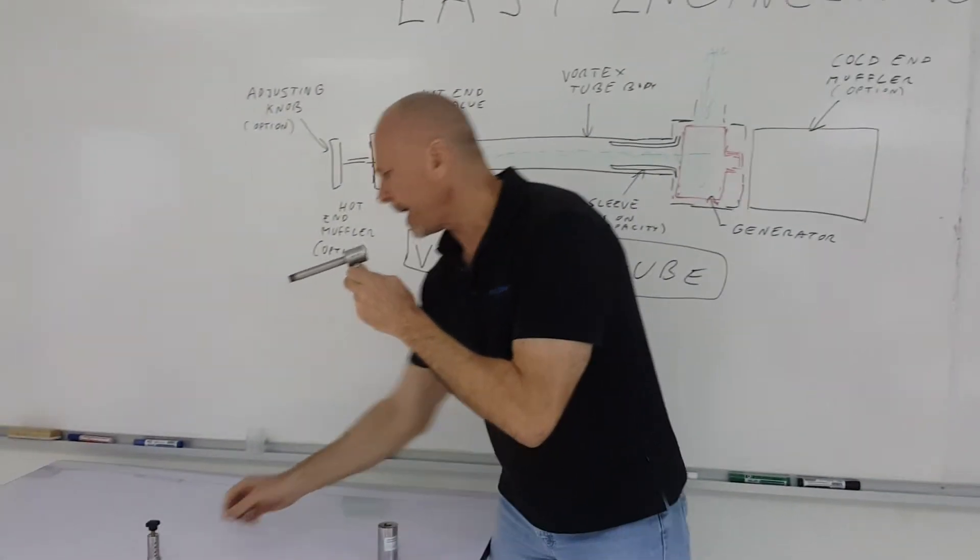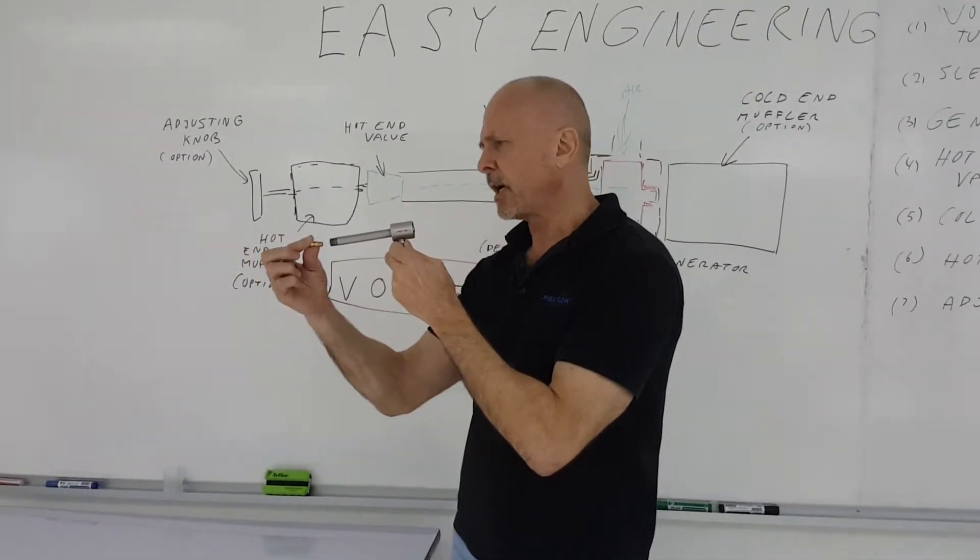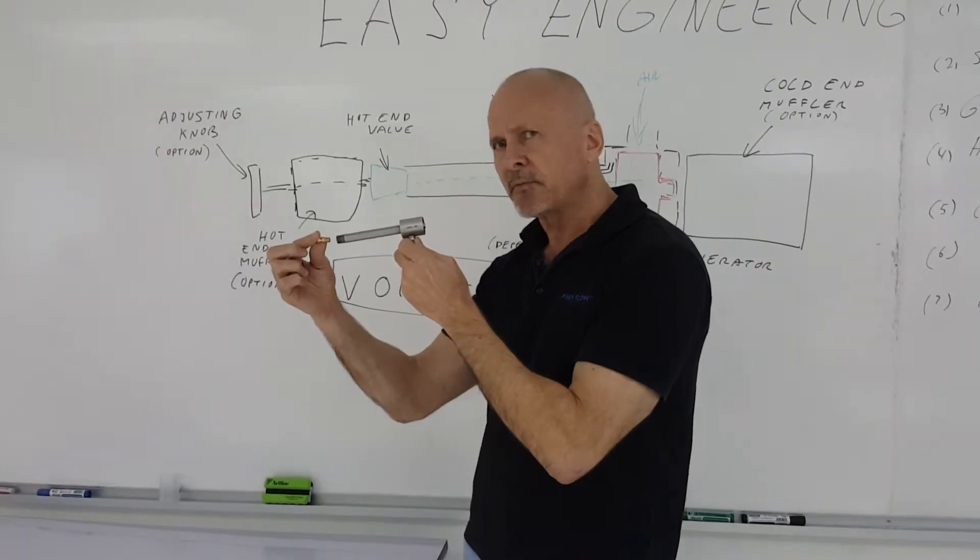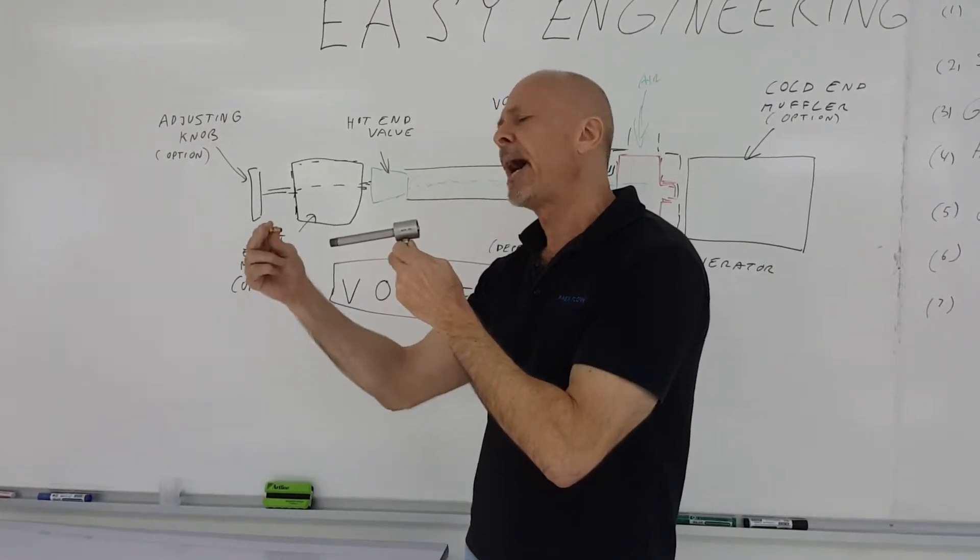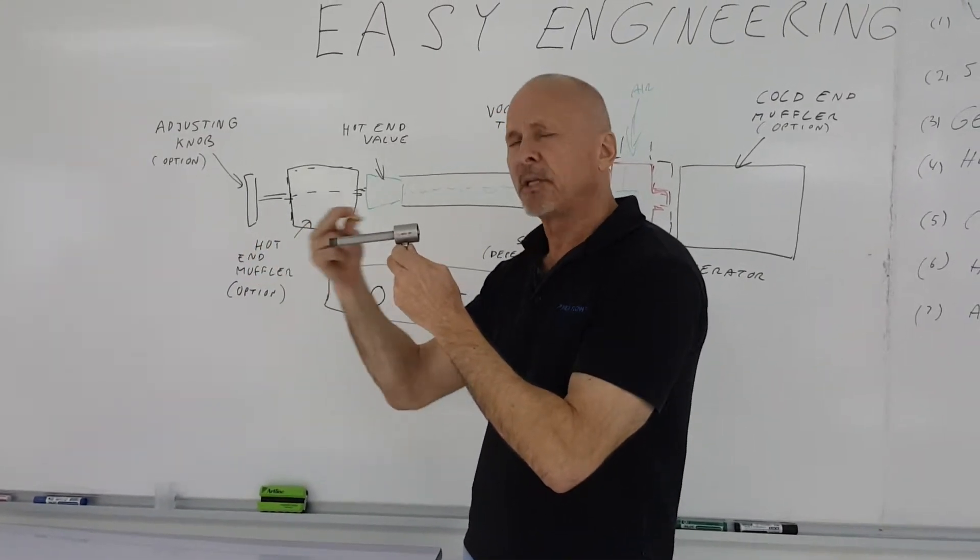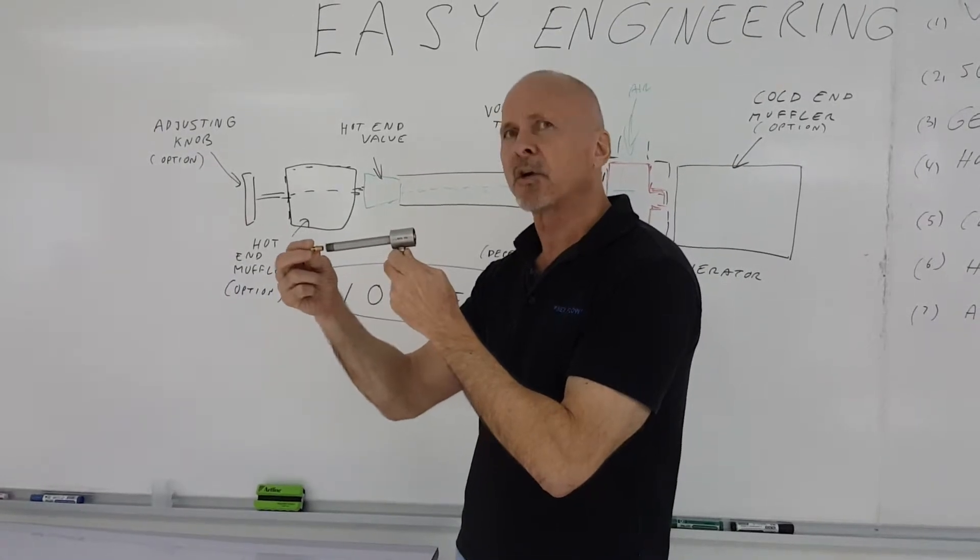At the other end it hits a valve, which changes the direction of that spinning air, and it spins back inside itself, back to the other direction, and it comes out at the cold end.